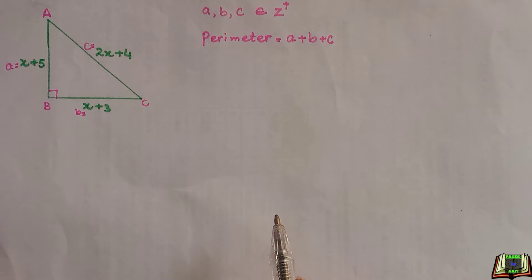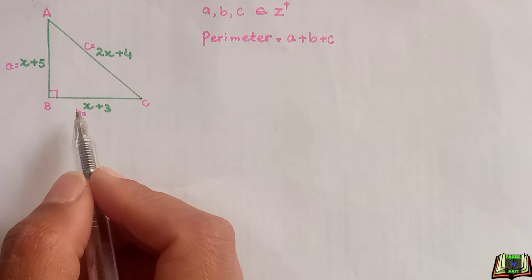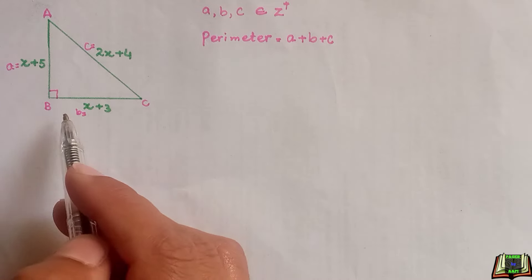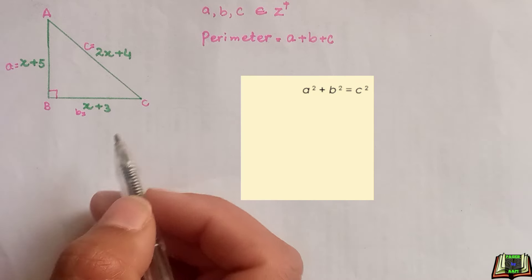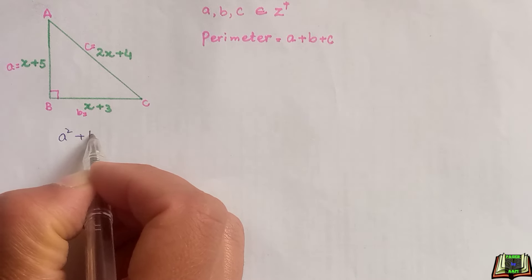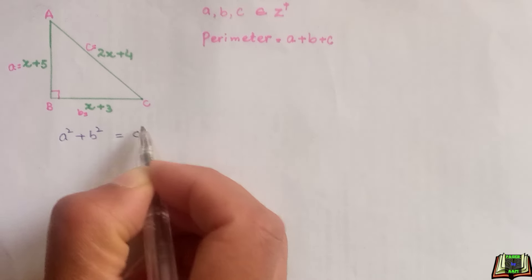To find out the value of x, we are going to use Pythagorean theorem. Pythagorean theorem states that perpendicular squared plus base squared is equal to hypotenuse squared. So a squared plus b squared is equal to c squared.